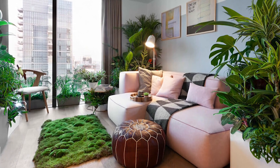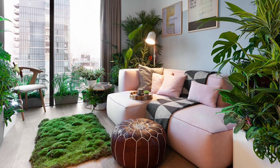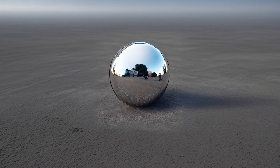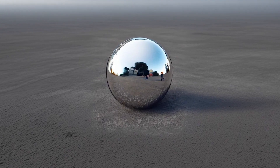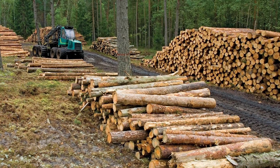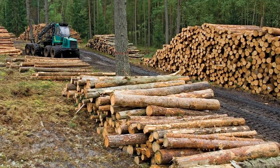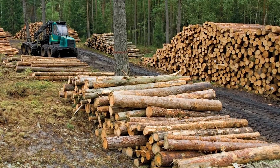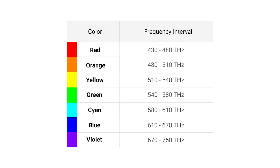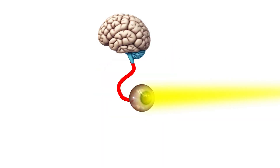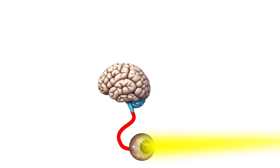Which frequencies are absorbed or reflected depends on the object's material. A metal object like silver reflects most of the light, because its atoms bounce back the light. A non-metal like wood absorbs most of the light, because its atoms trap light into them. This is how they are built. Every frequency is a different color, but who assigns these colors? You. Your brain. When light with different frequencies hits your eye, your eye sends a signal to your brain. Then your brain just interprets them as color.